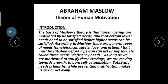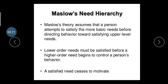This theory is very important for employers to understand how to motivate their employees and laborers in the organization. According to this basis, they decide what type of motivation to provide. Maslow's theory assumes that a person attempts to satisfy more basic needs before directing behavior toward satisfying upper-level needs. Basic needs include shelter, water, and clothing facilities. Any human being must first satisfy these before moving on to upper-level needs.